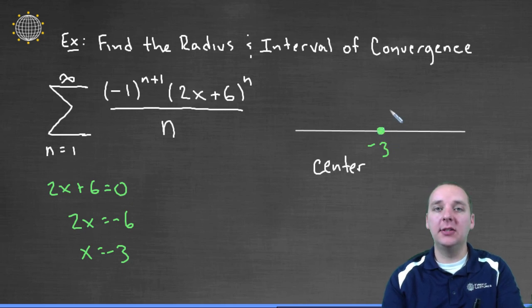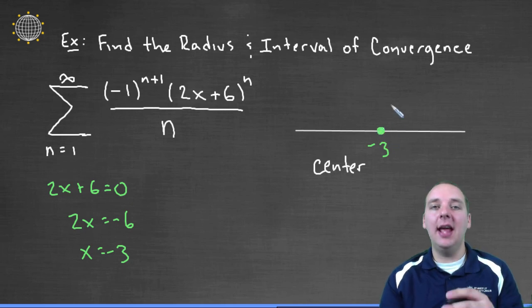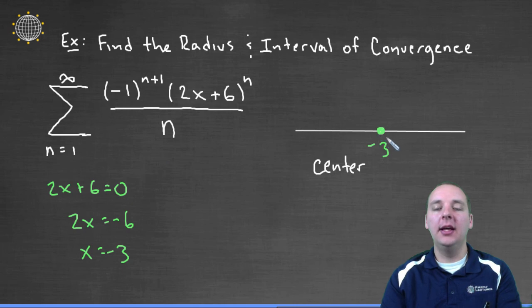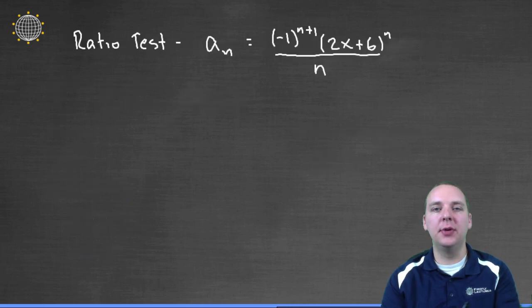Now the reason that's nice to find first is every power series always converges at its center. So if this guy is centered at negative 3, I know right off the bat that it will at least converge at negative 3. Now I have to determine will it converge anywhere other than negative 3. The test that we typically use to determine convergence is the ratio test.